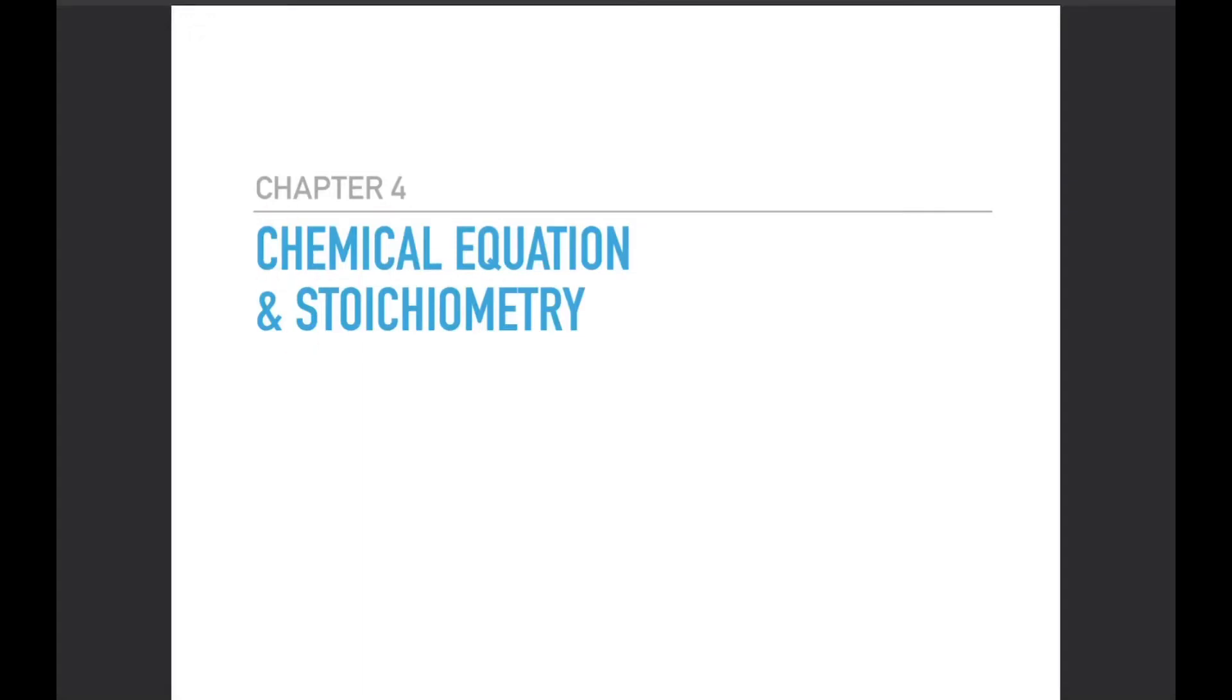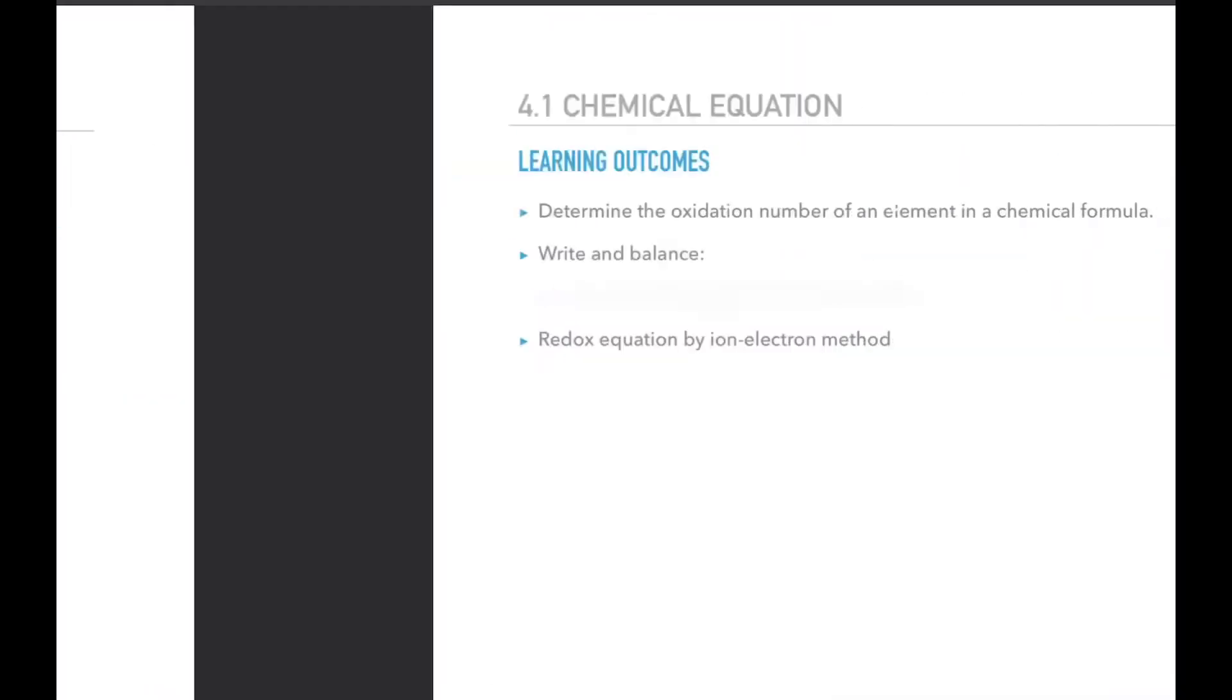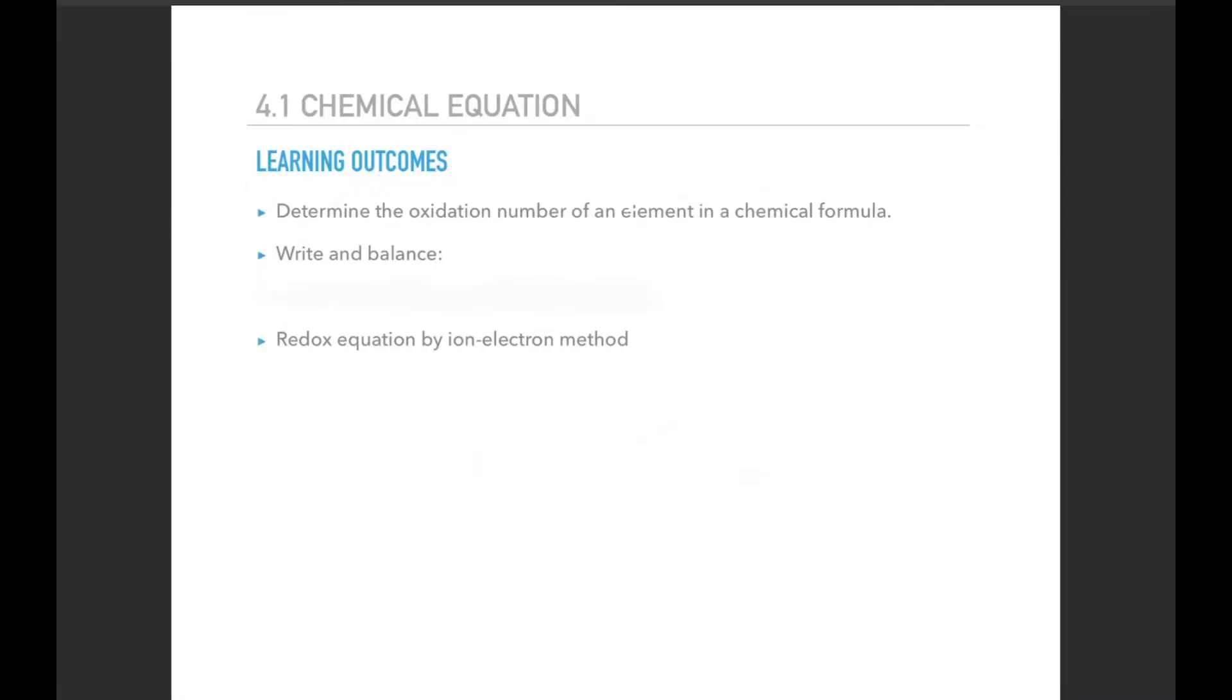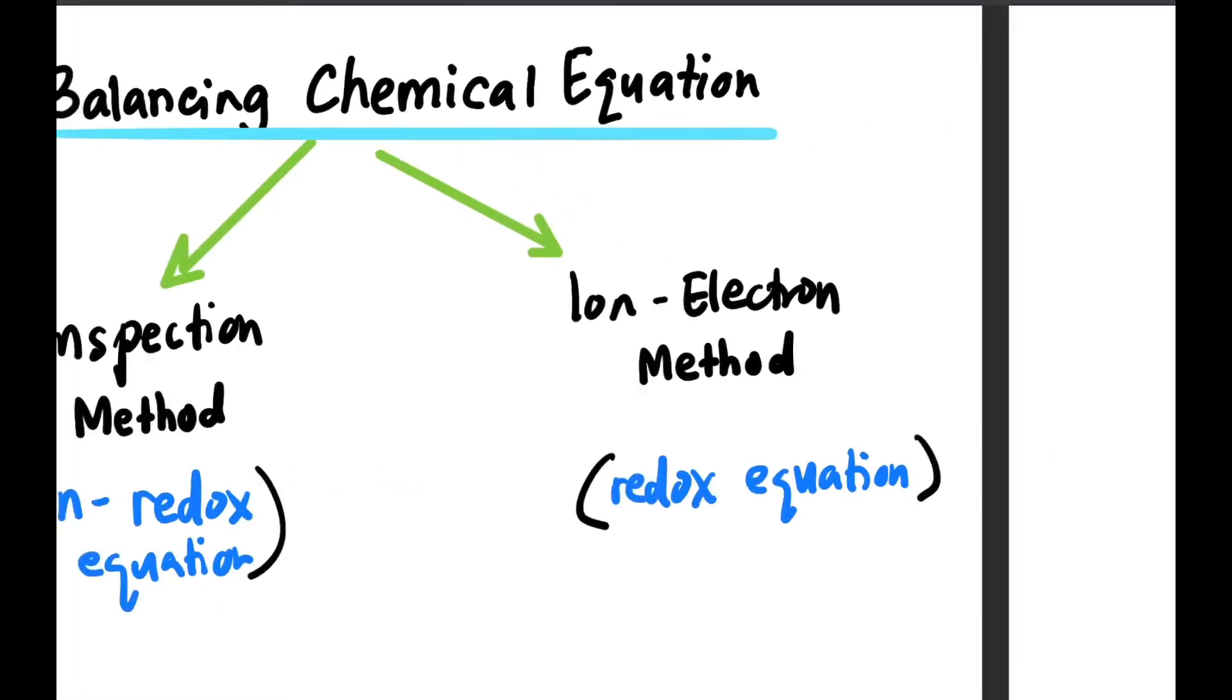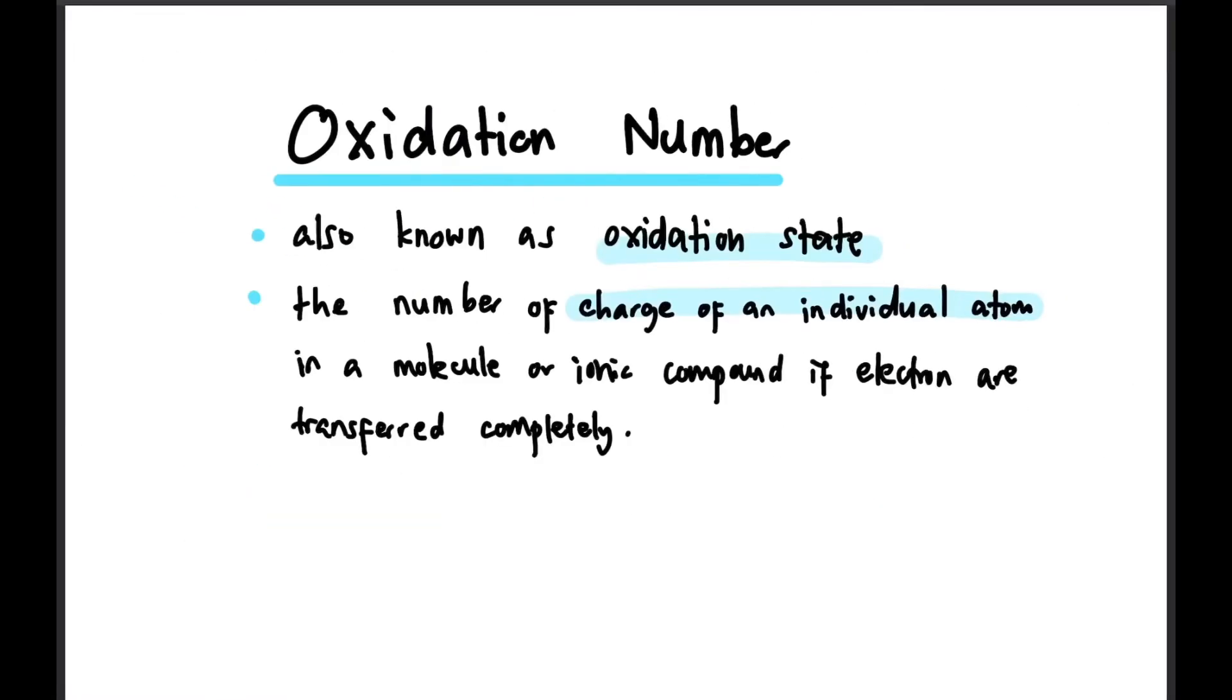Hi guys, welcome back to the channel. Still in chapter four, chemical equations and stoichiometry. At the end of this lesson you should be able to determine the oxidation number of an element and also write and balance redox equations. This is the recap of what we have done last time. Today we're going to focus on redox equations, but before that let's look at what is oxidation number. Oxidation number, also known as oxidation state, is the individual charge of an atom in a molecule or ionic compound.